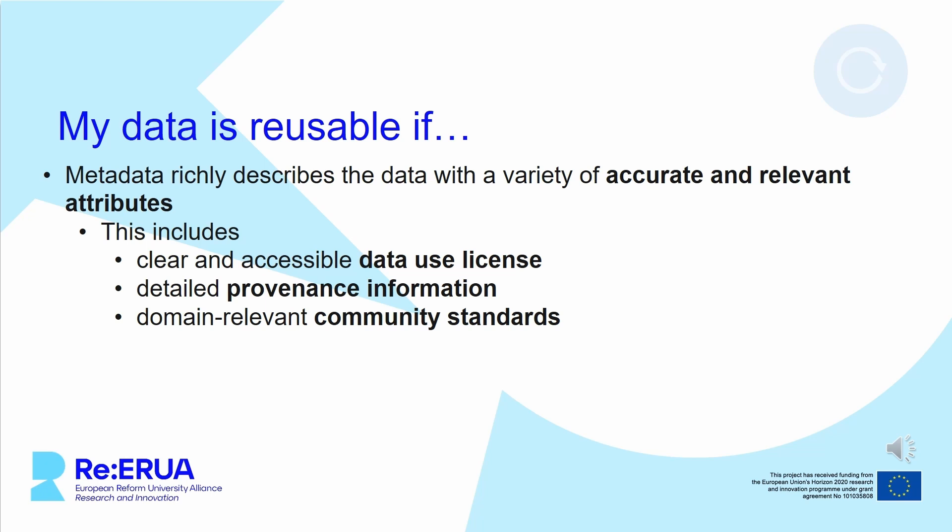Clear provenance information helps users understand who created the data and when, and it helps them verify the data's authenticity. As with interoperability, use domain-relevant community standards. It is always a good idea to stay in contact with your colleagues and your research community to keep yourself up to date on how to describe your data in the best possible way. Some points appear more than once because with the FAIR principles you can often kill two birds with one stone. If you hand over your data to a trustworthy, certified repository, this repository can help you comply with the FAIR principles. You can find out more about this in the module on repositories.